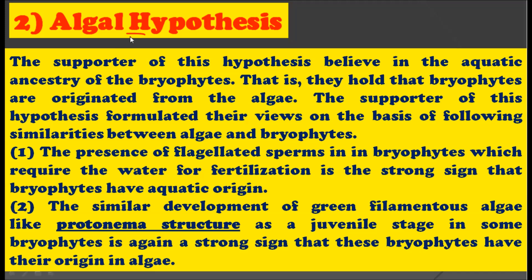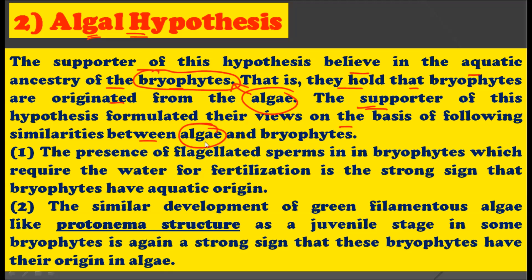The second hypothesis is the algal hypothesis. Supporters of this hypothesis believe in the aquatic ancestry of bryophytes. They strongly suggest that the origin of bryophytes is from the aquatic habitat — that is, bryophytes originated from the algae. Supporters formulated their views on the basis of similarities found in algae and bryophytes.